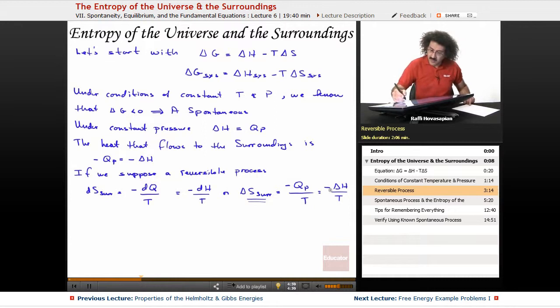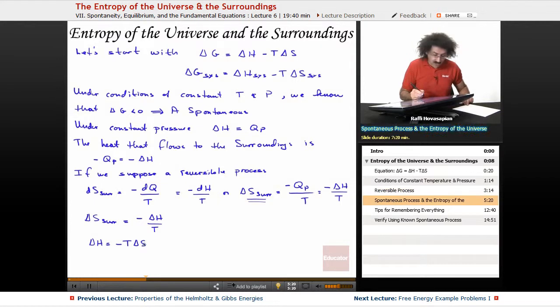So now, since we have delta S of the surroundings equals minus delta H over T, we can solve for the delta H. We're just going to move some things around. So we're going to get delta H equals minus T delta S. So now I'm going to take this delta H equals minus T delta S, and I'm going to put it back in for this delta H. And this is what I get.